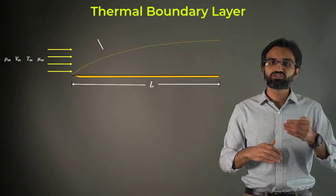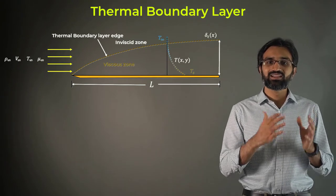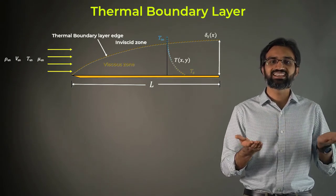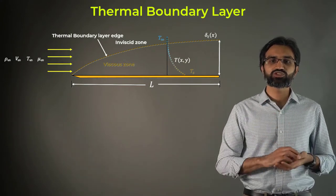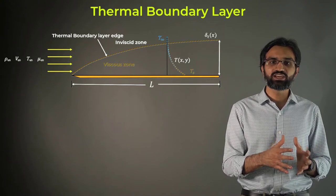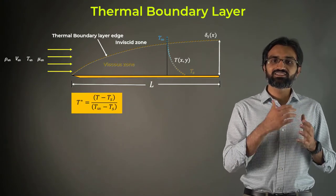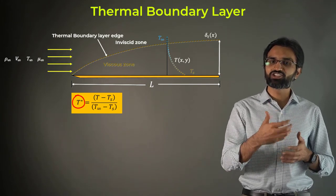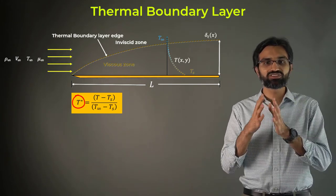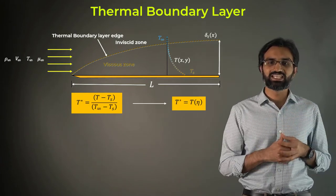A thermal boundary layer is created when a fluid flows over a heated flat plate. In this case, the plate temperature is held constant at Ts. To obtain the heat transfer solution, we take the energy equation into account. We define the dimensionless temperature T*, which is also a function of η, in terms of both surface temperature Ts and freestream temperature T∞.